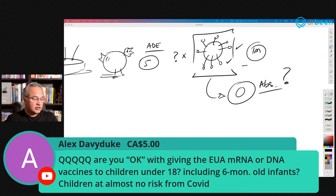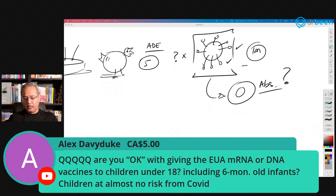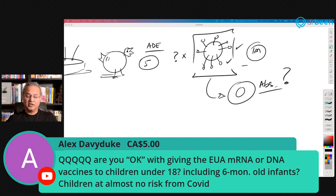Alex David Duke asks via Super Chat whether I am okay with giving EUA mRNA or DNA vaccines to children under 18, including 6-month-old infants, given that children are at almost no risk from COVID. I am pro-vaccine and believe vaccines are generally safe for children. However, I am a little more conservative about children receiving newer vaccine types. I would prefer adults to serve as the observation group before children are given mRNA vaccines, since these are a newer type not yet fully tested over long periods.